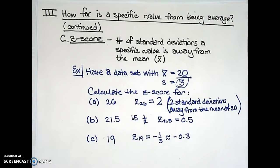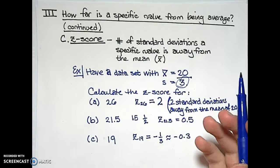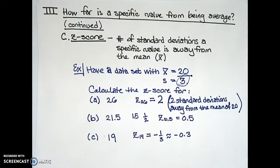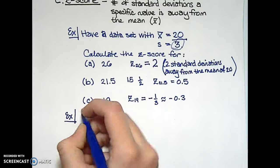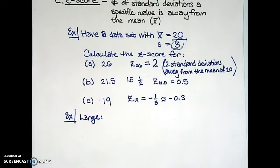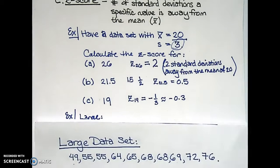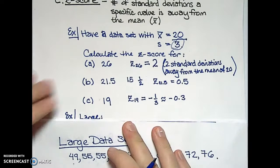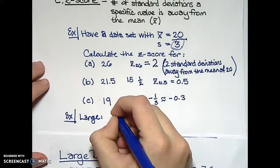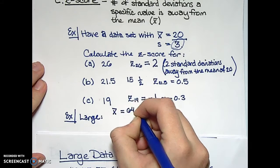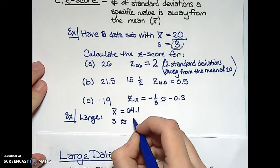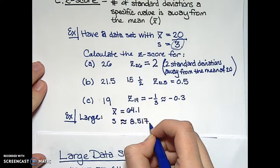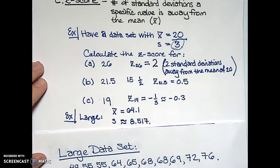So this seems fairly simple — the z-score measures the number of standard deviations a specific value is away from the mean. But what could be difficult about this? Well, let's switch to considering our large data set. Recall that this data set has 10 values ranging from 49 up through 76, with a mean of 64.1 and a sample standard deviation of approximately 8.517.